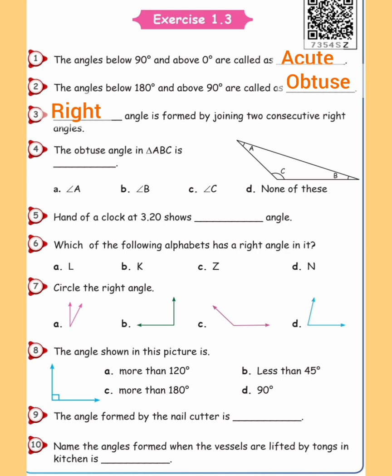Fourth question: what is the obtuse angle in triangle A, B, C? Looking at triangle A, B, C, the angle above 90 degrees is angle A. Fifth question: the hands of a clock at 3:20 show what type of angle? At 3:20, the hour hand is at 3 and the minute hand is at 4, so the angle formed is an acute angle.